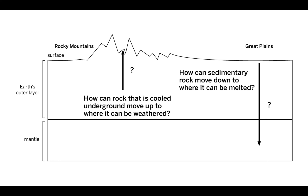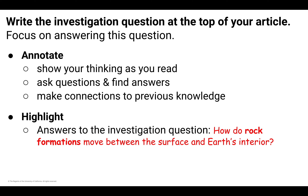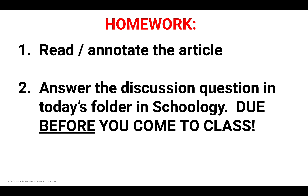Here's what I want you to do: focus on answering that investigation question as you read the article. As you annotate, show your thinking as you read — make little notations on the side. Think about your key concept, prior information, things that are interesting. Ask questions, and when you find the answer, circle it and draw an arrow back up to where your question was. Make connections to previous knowledge. The difference today is I don't want you to highlight anything except the information that answers the investigation question. Don't highlight vocabulary words or somebody's name — only highlight where you find answers to the investigation question.